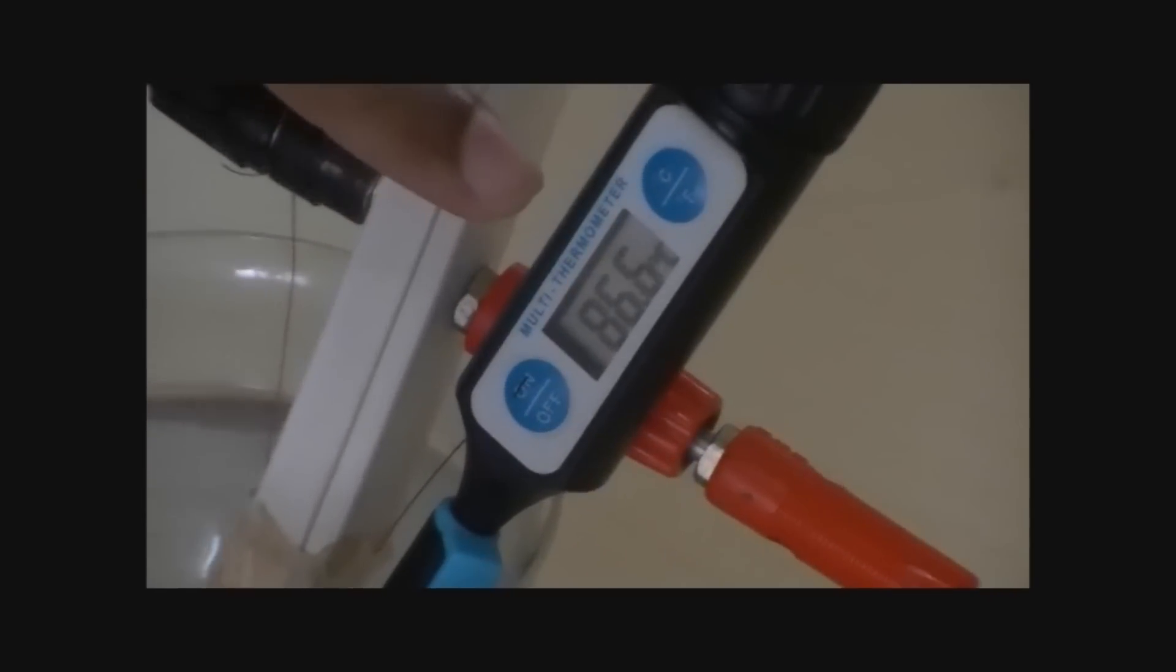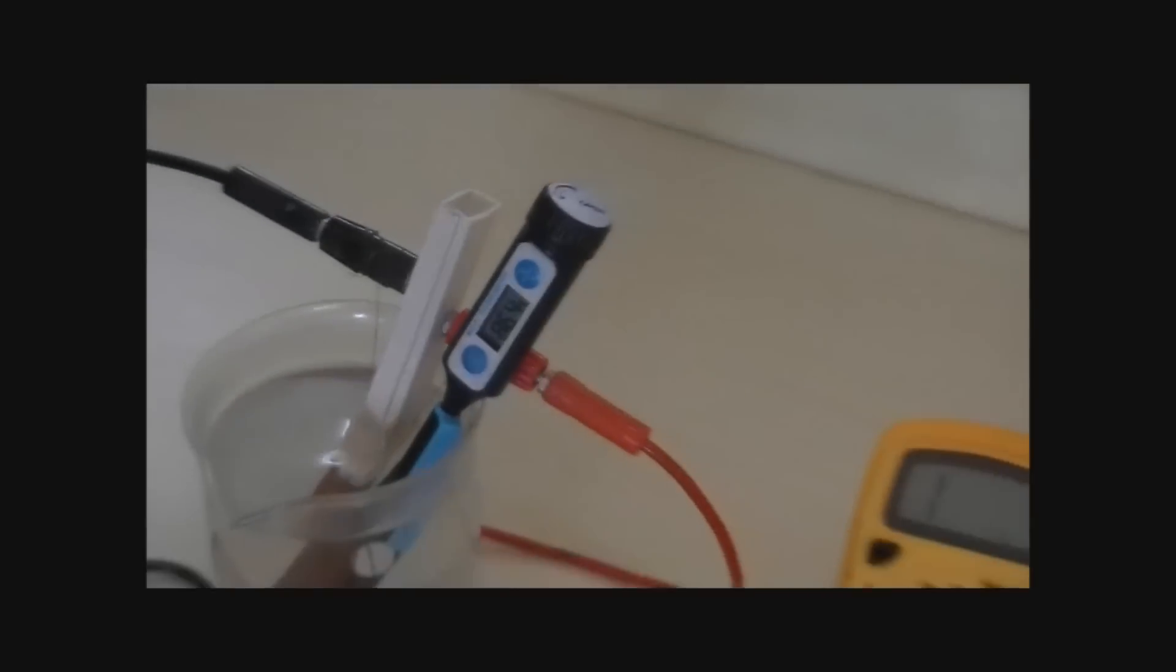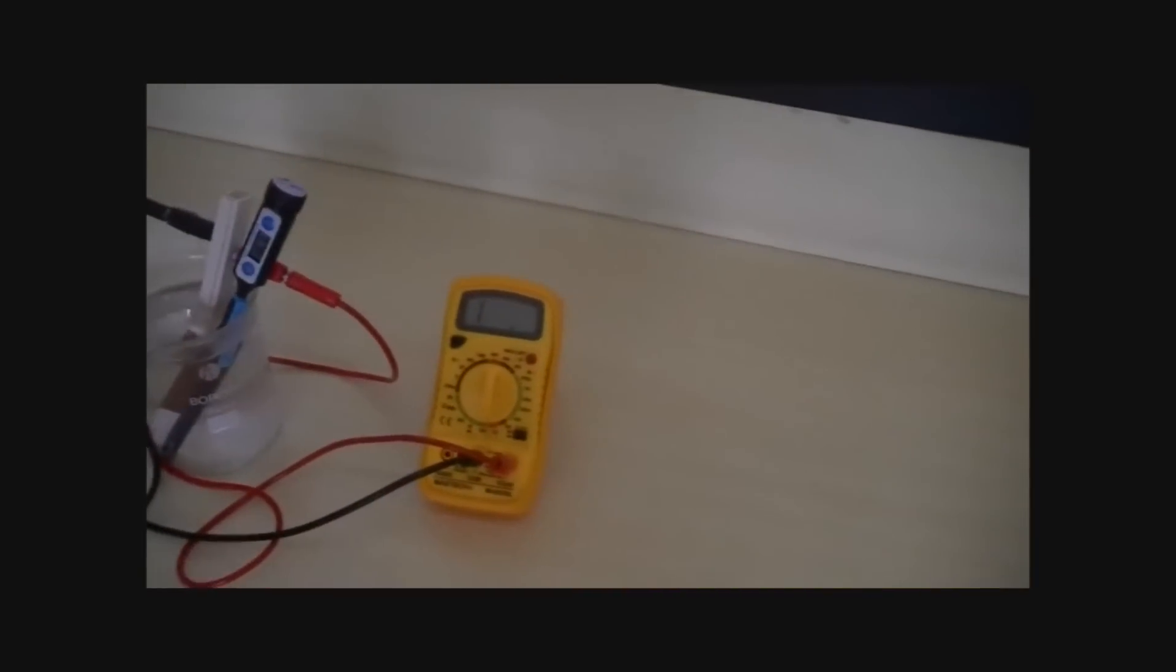The temperature in the digital thermometer is 86.7 degrees and a half. You can also see the resistance on the multimeter.